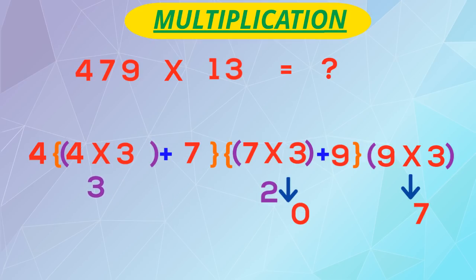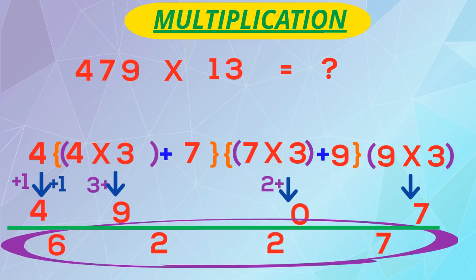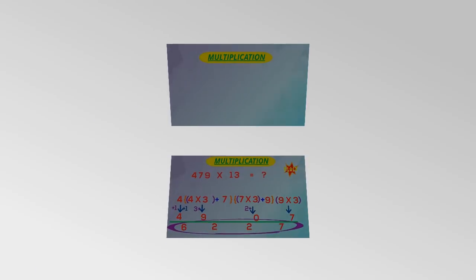4 into 3 plus 7 is 19, 9 we will write, 1 carry over. Now don't forget to add the carry over: 0 plus 2 is 2, 9 plus 3 is 12, 2 will come down, 1 carry over. So 4 plus 1 plus 1 is 6. Our answer: 6227.